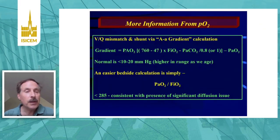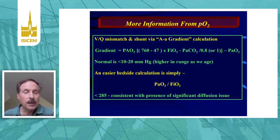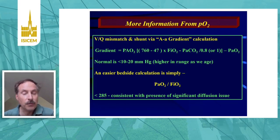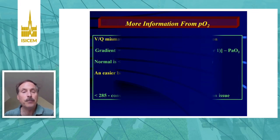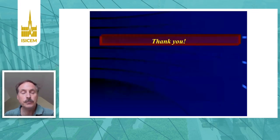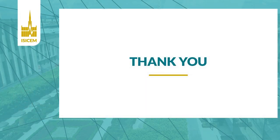Finally, from the information from the PO2, we can look at the diffusion characteristics of the lungs via the A-a gradient, which is normally about 10 to 20. An easy way to calculate it is to take the PO2 of the arterial blood gas and divide it by the FiO2 — and if it's less than 285, this is consistent with the presence of a significant diffusion issue. Thank you very much, and I hope that helps your interpretation of blood gases.